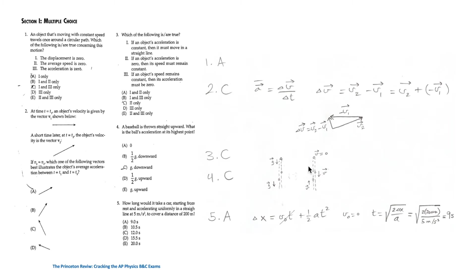The velocity first decreases directed upward, reaches 0 at maximum height, then changes direction downward and increases. So for question 4, the answer is C. For question 5, a car starts from rest and accelerates uniformly in a straight line at 5 m/s² to cover 200 meters. Using the kinematic equation with initial velocity 0, the time is 9 seconds, so the answer is A.